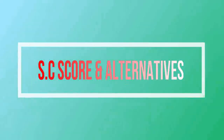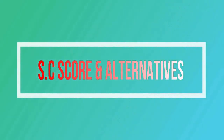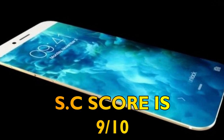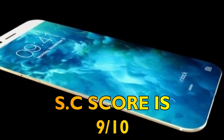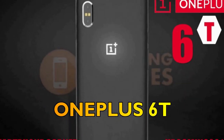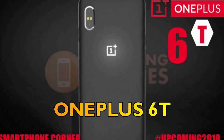Finally, we shall talk about the overall score and alternatives for iPhone 9 Plus. The overall score from Smartphone Corner will be 9 out of 10, and the best alternative for iPhone 9 Plus is the OnePlus 6T.